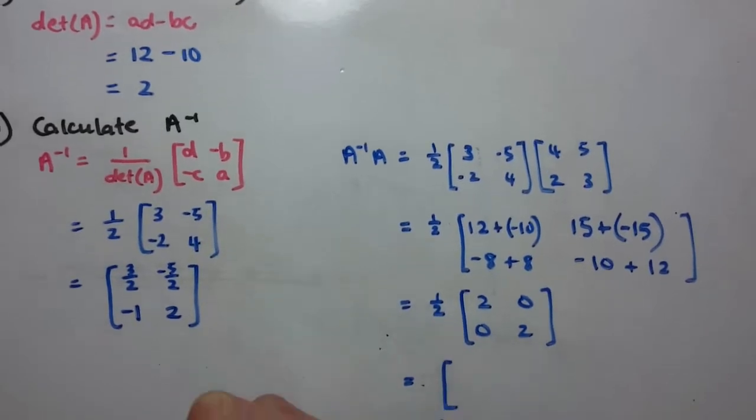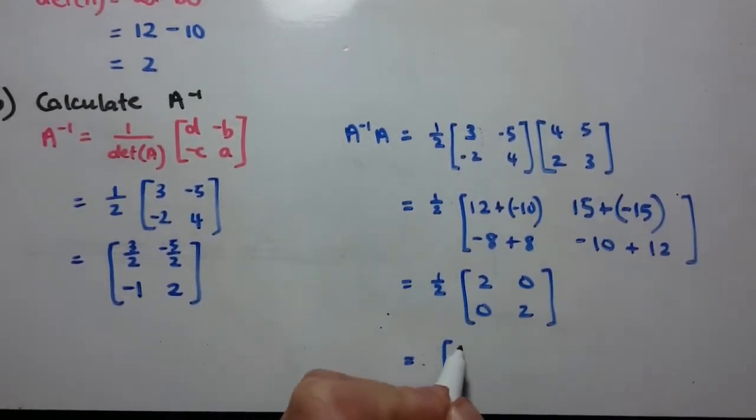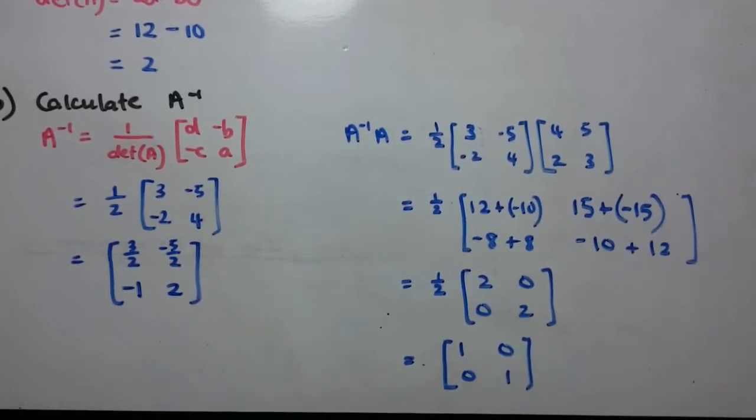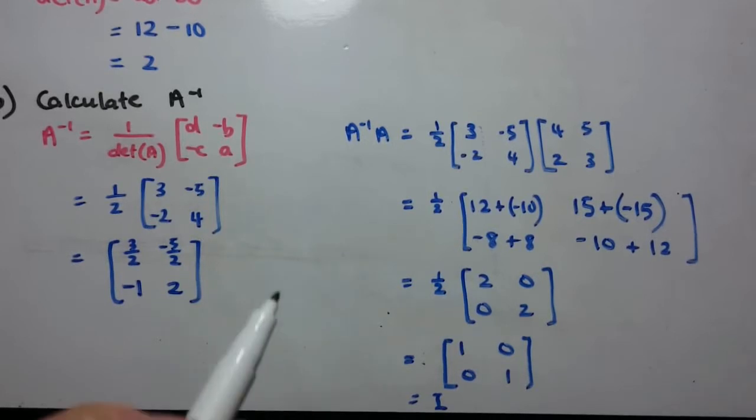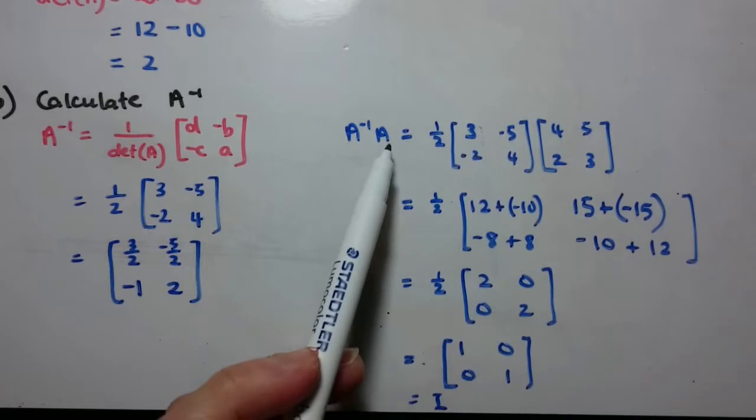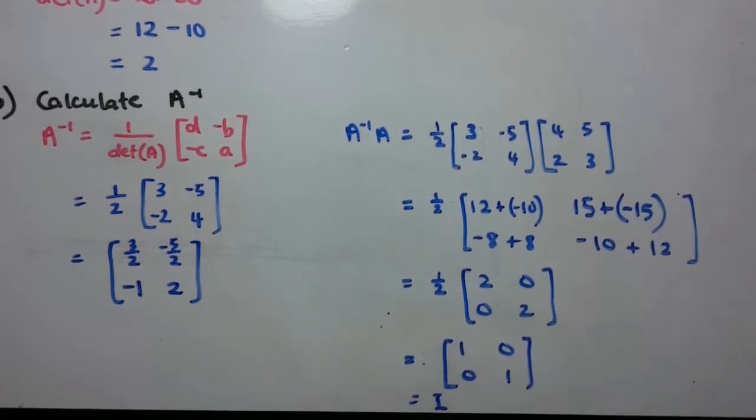Now when I multiply it out, I get 1, 0, 0, 1, which is I. So we've verified that we've done the inverse correctly, because when I multiplied the inverse by the original matrix, I got the identity matrix.